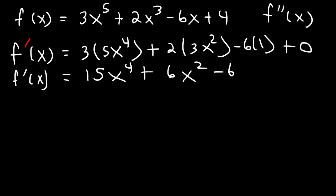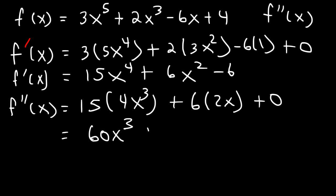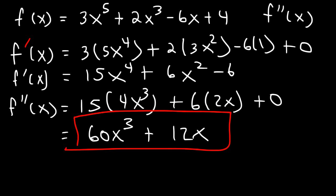Now we need to differentiate this expression one more time to get the second derivative. So if we differentiate x to the 4th, that's going to be 4x cubed. And the derivative of x squared is 2x. So the second derivative is going to be 15 times 4, which is 60, and 6 times 2 is 12. So it's going to be 60x cubed plus 12x.